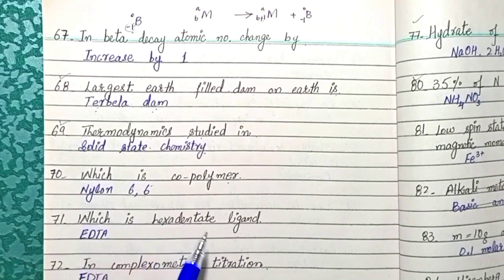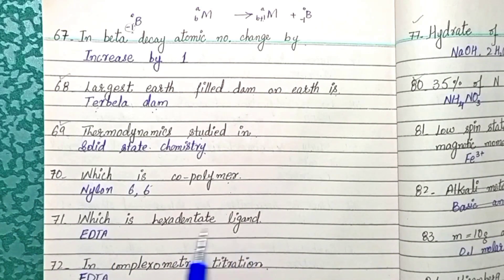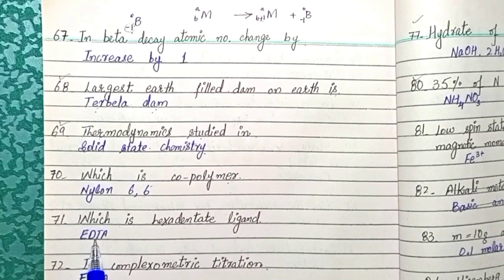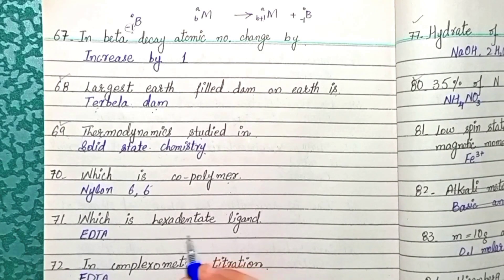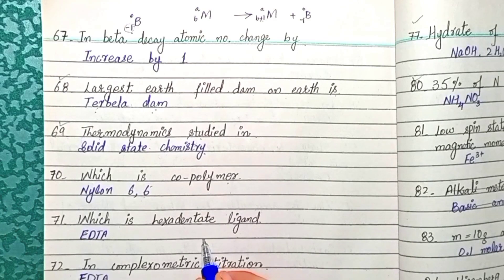Question 71: Ethylenediaminetetraacetic acid (EDTA) is a hexadentate ligand — it can donate lone pairs of electrons from 6 different sites.